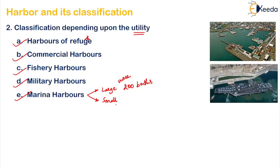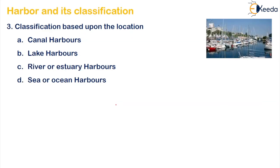The third classification is based on location — where the harbor is situated. There are four categories: canal harbor (beside an artificially made canal), lake harbor (beside a lake), river or estuary harbor (beside a river or estuary), and sea or ocean harbor (beside the sea or ocean). This completes the classification of harbors.